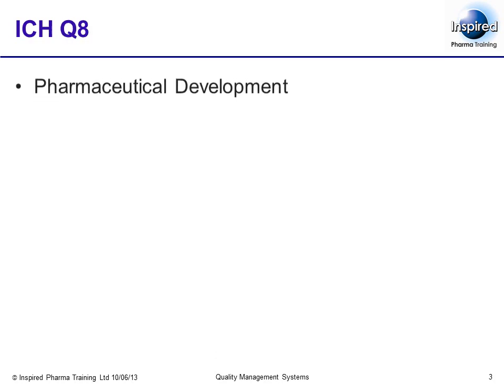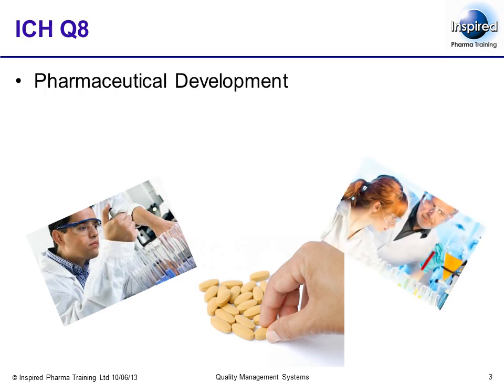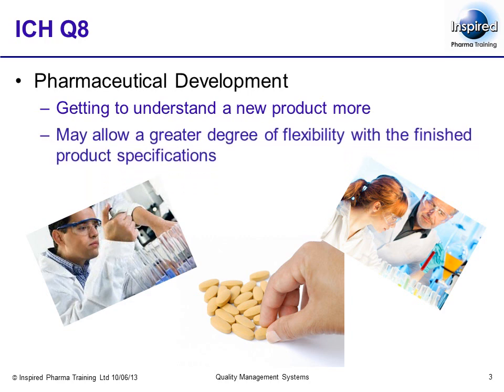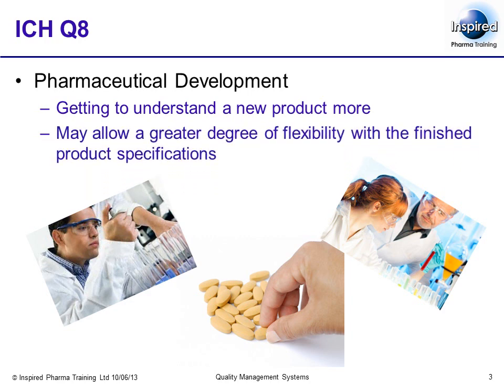ICH Q8 covers pharmaceutical development, an activity not covered in GMP, as GMP starts once a product has been developed. A copy of ICH Q8 can be found in the attachments part of this presentation. The focus of ICH Q8 is about getting to understand a new product more at the last stages of its development before it is transferred to a manufacturing facility. If done, this may allow a greater degree of flexibility with the finished product specifications.